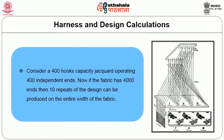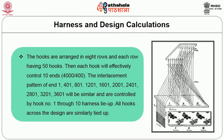For example, consider a 400-hook capacity jacquard operating 400 independent ends. If the fabric has 4000 ends, then 10 repeats of the design can be produced on the entire width of the fabric. Assuming the hooks are arranged in 8 rows with each row having 50 hooks, then each hook will effectively control 10 ends — simple arithmetic: 4000 divided by 400 gives 10 repeats.